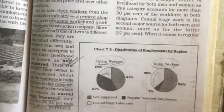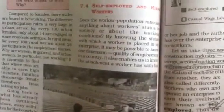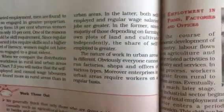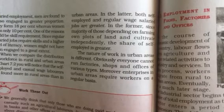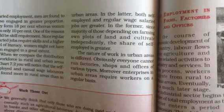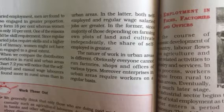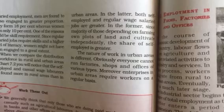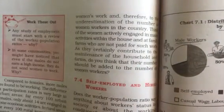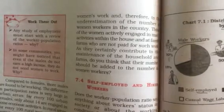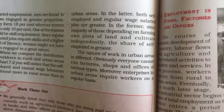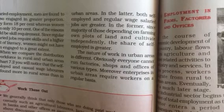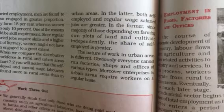Moving on to the rural area, there will be more casual wage laborers: 39% are casual wage laborers, 7% are regular salaried employees, and 54% are self-employed. So again, 54% are self-employed in rural areas. This is the distribution of employment by region. In the agricultural sector, why casual laborers are more is because majority depend on farming on plots of land and cultivating from there, so self-employment is much higher in the rural area — there are more opportunities of being self-employed. This covers the distribution of self-employed, casual wage laborers, and regular salaried workers in India.